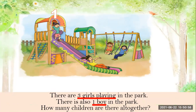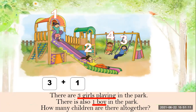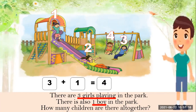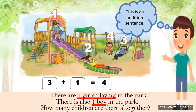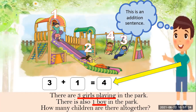So let's count: one, two, three — three girls. And four — one boy. So three girls plus one boy is equal to four. It's very easy! So this is an addition sentence: three plus one is equal to four.